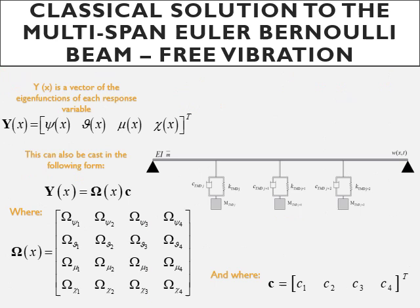From here the matrix method is followed where the vector y is constructed from the four eigenfunctions previously discussed. This vector consists of the matrix Ω(x) which is constructed from the characteristic equation and the vector c which is composed of the unknown constants.